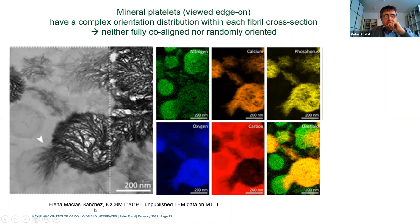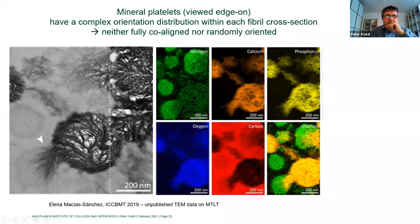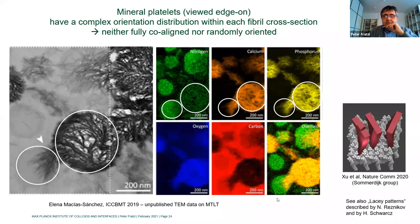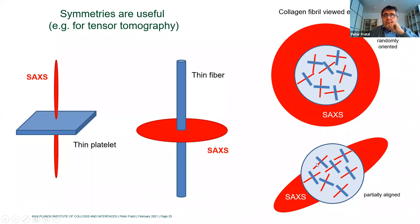TEM data from Elena Marcia Sanchez, now in Nico Sommerdijk's group in Nijmegen: a single fibril shown with a chemical map — nitrogen for protein, calcium and phosphorus for mineral. The mineral is infiltrating the fibril as more or less parallel plates seen edge-on. This is consistent with other recent papers describing lacy patterns by Reznikov and Schwarcz, and work from the Sommerdijk group.